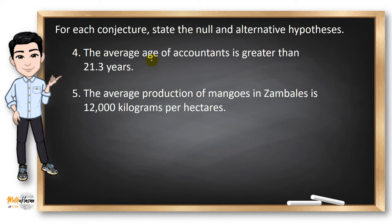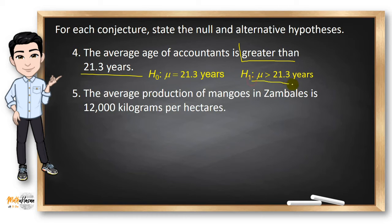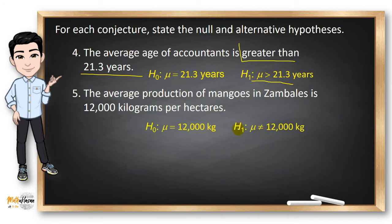In number four, the average age of accountants is greater than 21.3 years. So the alternative hypothesis must be greater than 21.3 years. And in number five, the average production of mangos in Zambales is 12,000 kilograms per hectare. Like in number one, the alternative hypothesis must be not equal to 12,000 kilograms.